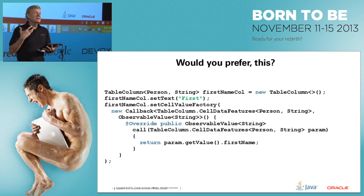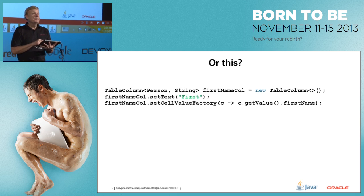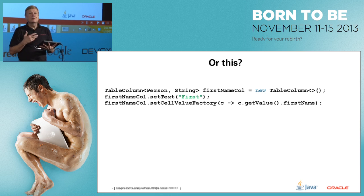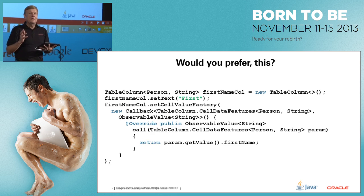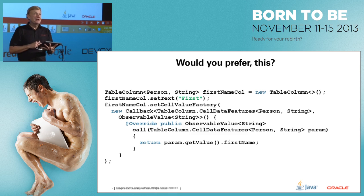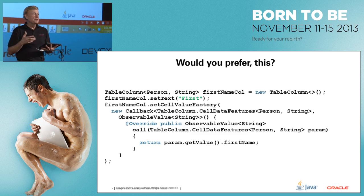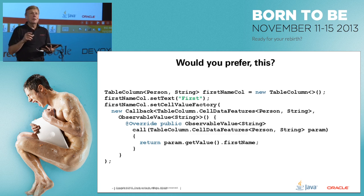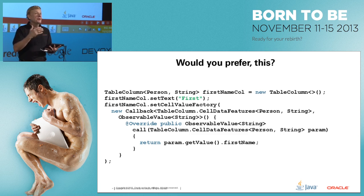Lambdas really clean up your code. Here is how you would create a table column for a TableView — this is what it looks like with lambda expressions. It's much cleaner and much easier to use. I would definitely suggest moving over to lambdas, seeing the benefits not only in less code but also in power when it comes to leveraging multiple cores.